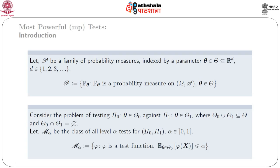Consider the problem of testing the hypothesis H_0: theta belonging to Theta_0 against H_1: theta belongs to Theta_1, where Theta_0 union Theta_1 is a subspace of the whole space and Theta_0 intersection Theta_1 is equal to the null set. Let M_alpha be the class of all level alpha tests for H_0 against H_1, where alpha belongs to the closed interval [0,1]. By the size or level of a test, we mean its expected value is less than or equal to alpha for all theta belonging to Theta_0.